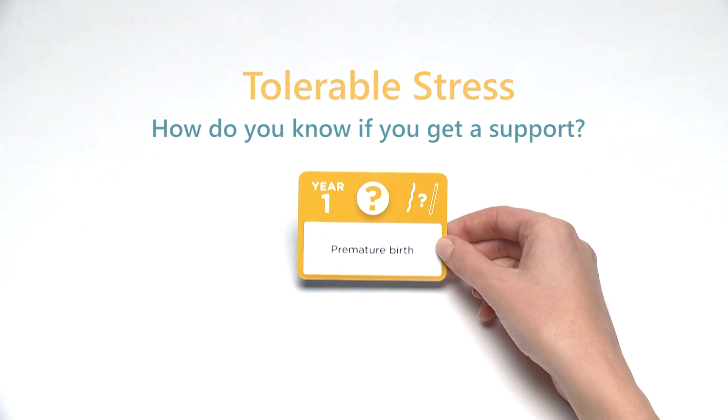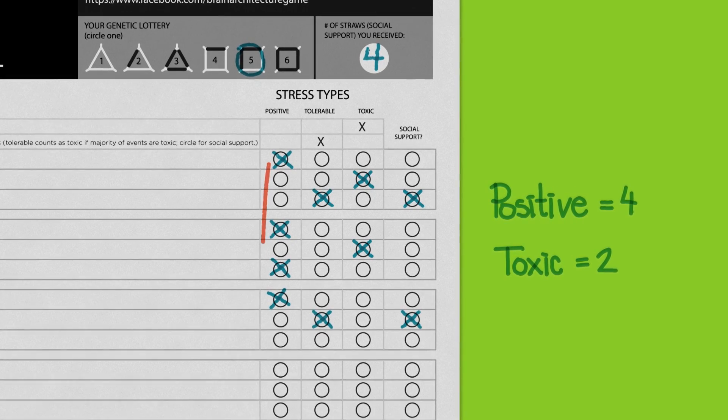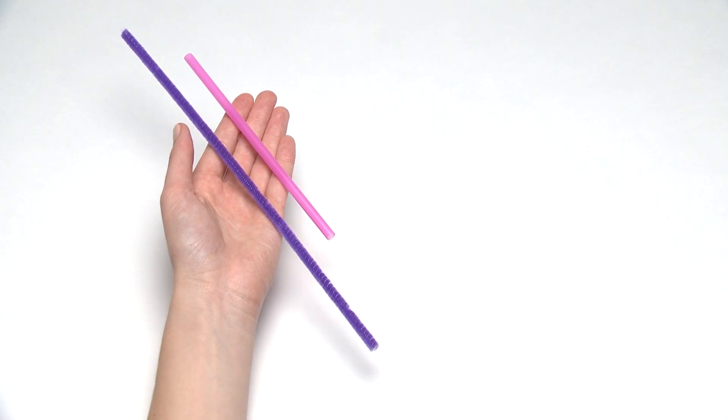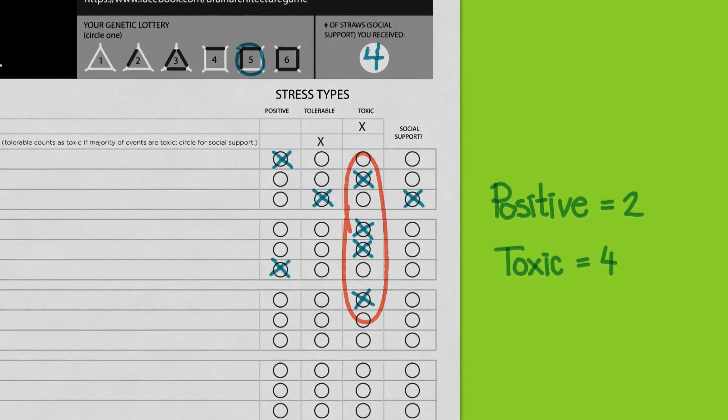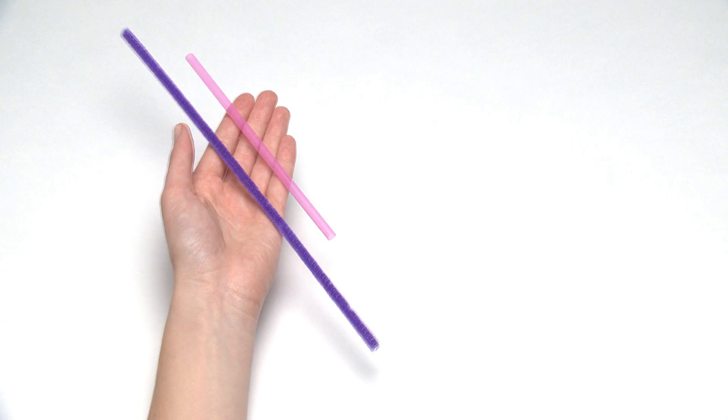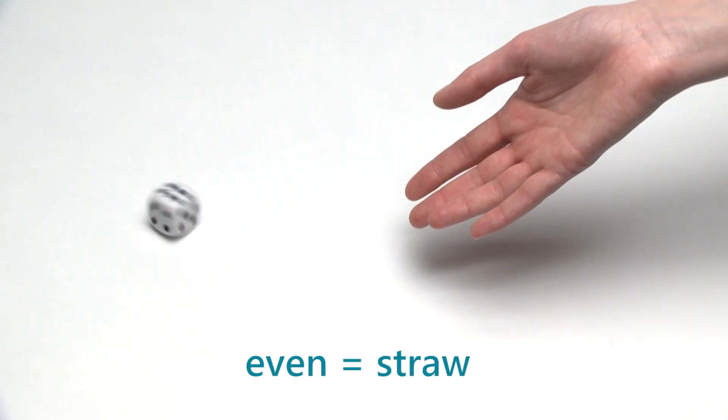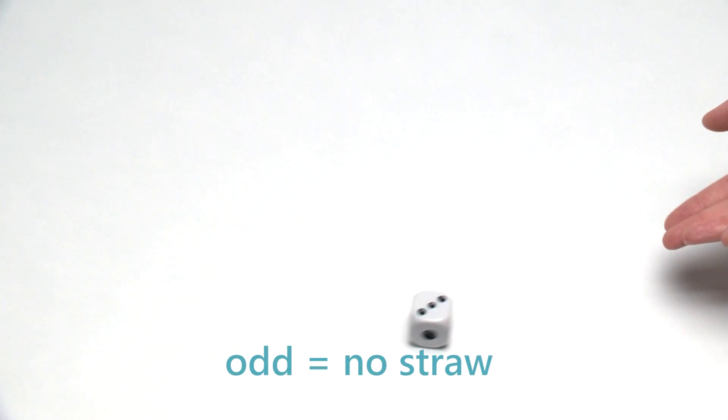If you draw a question mark card, you may or may not get a support. Add up your life experiences in the game so far. If you've had more positive than toxic experiences, take a straw with your pipe cleaner. If you've had a pileup of toxic stress, you probably aren't getting the caregiver support you need, so no straw for you. If it's a tie or if this is your first life experience card, roll the die. Even rolls mean positive, odd rolls mean toxic.